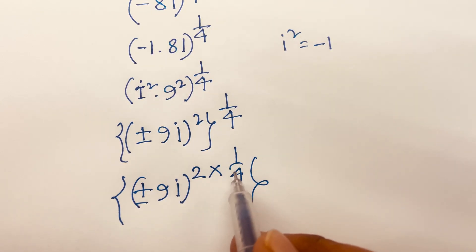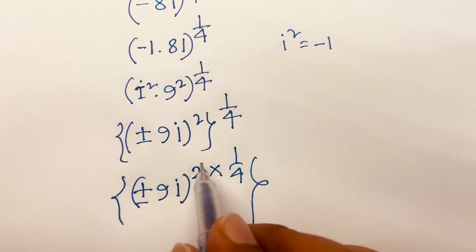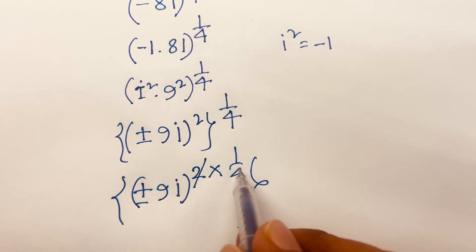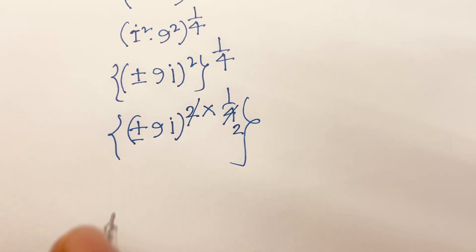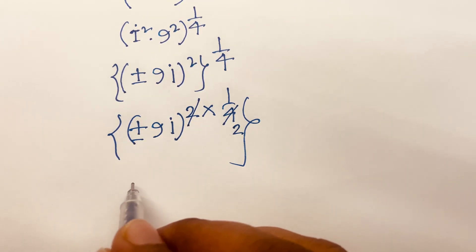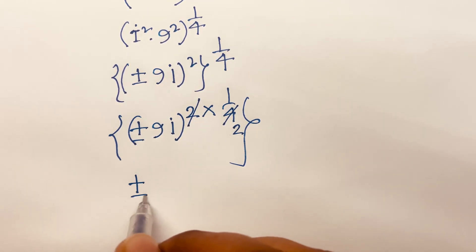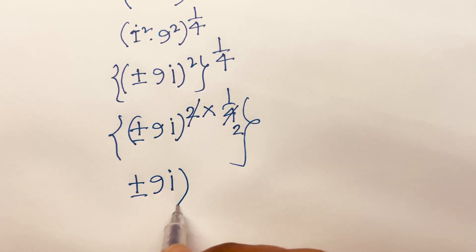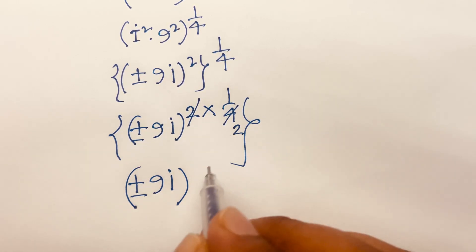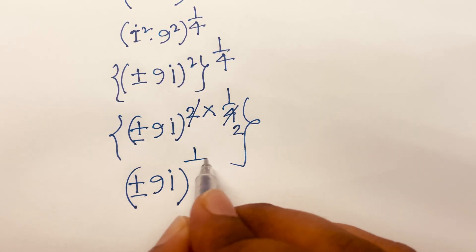Then I can say 2 and 4 are cancelled — the exponent 2 times 1 over 4 simplifies. So we will find out 9i bracket raised to the power of one half.